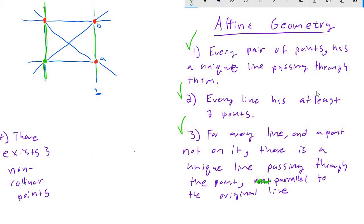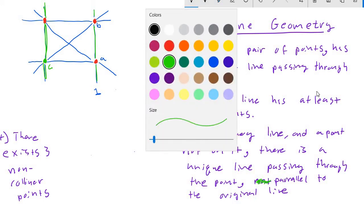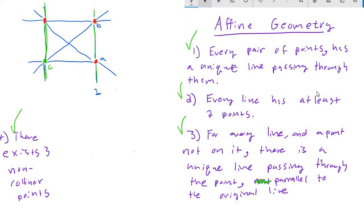And finally, there exist three non collinear points. So if I take this green point, call it C, the point A and the point B, these don't all lie on one line. So the idea here is that we're taking our intuition about how things work in the plane, in R2, and we're extending that, these sort of four basic properties, we're extending them to more exotic things, such as thinking about finitely many points or lines that have only finitely many points on them.